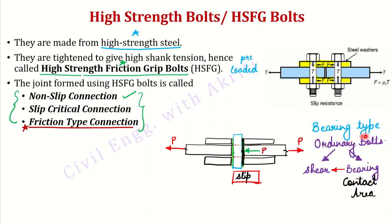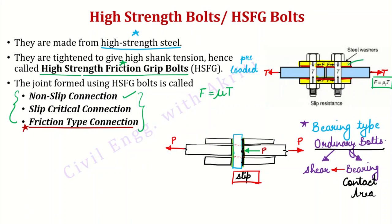If we say bearing type connection, you should understand that ordinary bolts are being used. Similarly, where friction provides resistance, it is a friction type connection. In this case, at the interface between the blue member plates and the yellow cover plates, force T is acting. This T creates friction at the interface. The friction resistance is mu times T — so mu × T acts at the interface. To cause movement, the applied force must exceed this frictional force.